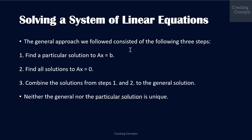The general approach we usually follow for solving a system of linear equations consists of three steps. First, we find a particular solution to Ax = b. Then we find all solutions to Ax = 0. Later, we combine the solutions from steps 1 and 2 to give the general solution. Note that neither the general nor the particular solution is unique.